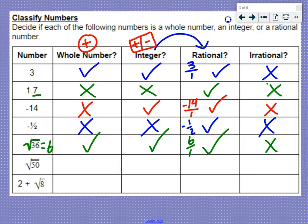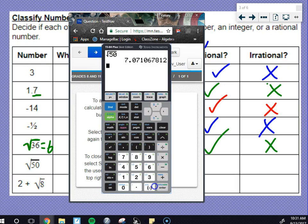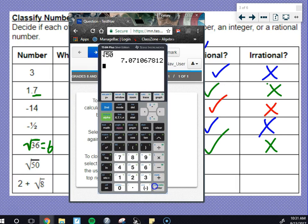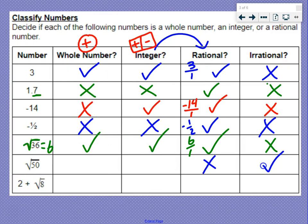Square root of 50. That's not a perfect square. So if we bring up our calculator, we can type in the square root of 50 and get an estimation. If you see that, this decimal goes on and on and on, and we're not repeating any numbers. So since it's a never-ending, non-repeating decimal, that makes it irrational, which means it's not going to be rational, not going to be an integer, and not going to be a whole number.